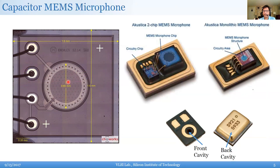The capacitor plates move with the sound and that converts into an electrical signal. The package must be airtight on the backside; otherwise sound will just pass through and you won't get any pressure on the capacitor disc. The only opening is the front cavity, where sound pressure goes in to move the capacitor plate and create the electrical signal proportional to your voice.